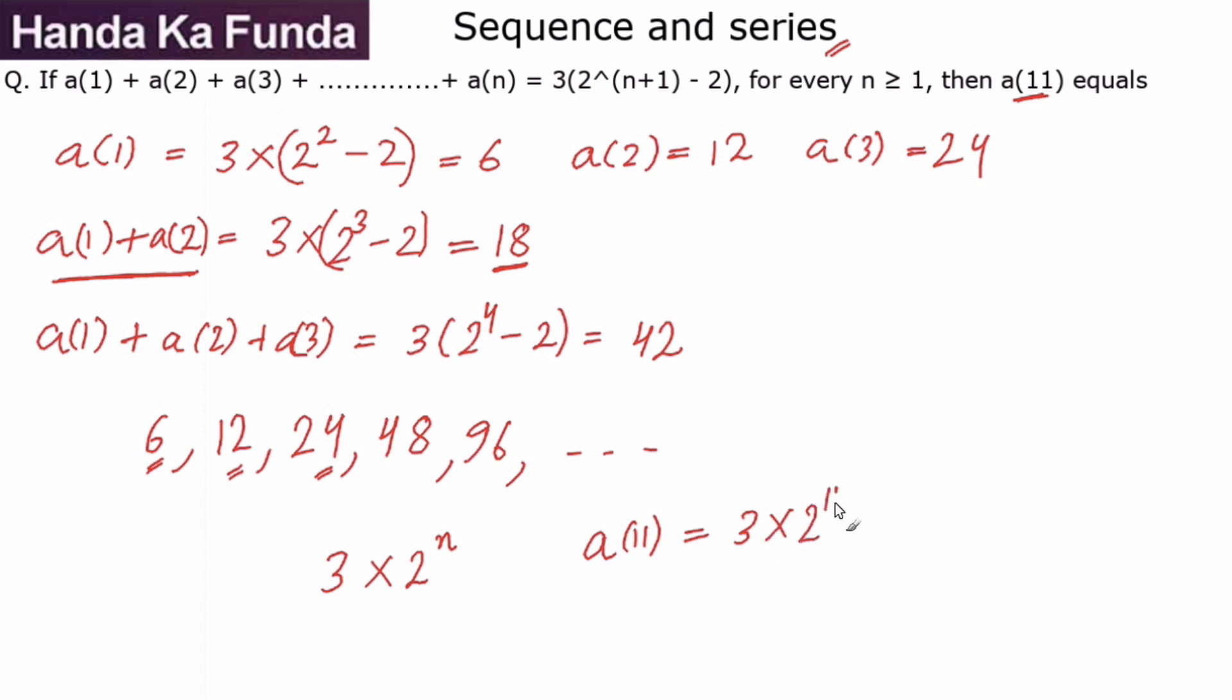Which is 3 into 2 to the power 10. I know 2 to the power 10 is 1024, so 2 to the power 11 will be 2048. And if I multiply 3 with 2048, I get 6144, which is my answer.